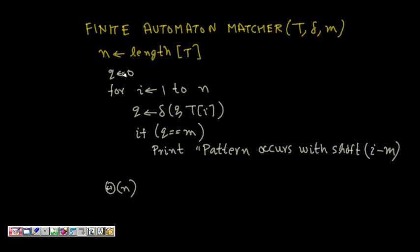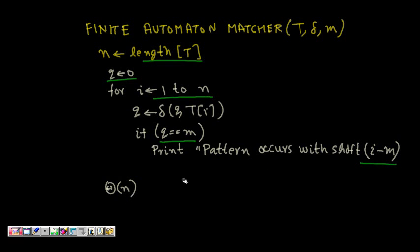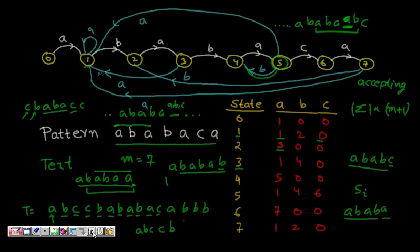Once the table is constructed, we run through the text: q = 0, and for i from 1 to n, we set q = delta(q, text[i]). If q equals m, we have found a match at position i minus m. This runs in Θ(n) time. That is the complete idea of pattern matching using finite automata.